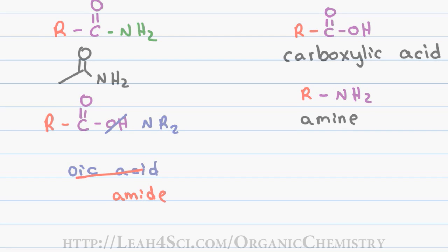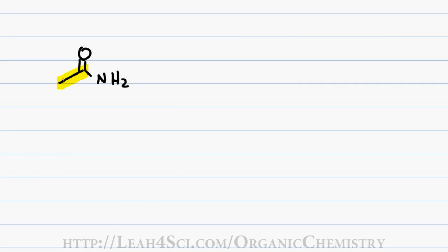We'll start with this simple example by identifying and highlighting the parent chain. The amide is understood to be a primary functional group which means it shows up in the beginning of the molecule and gets the number one.